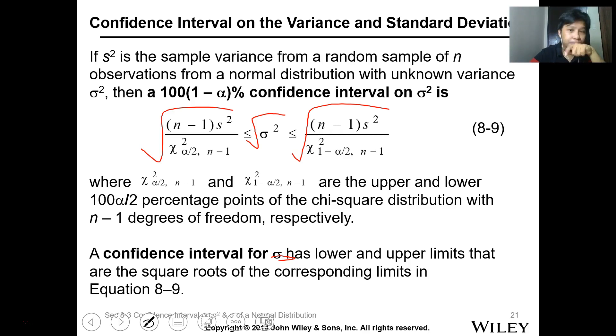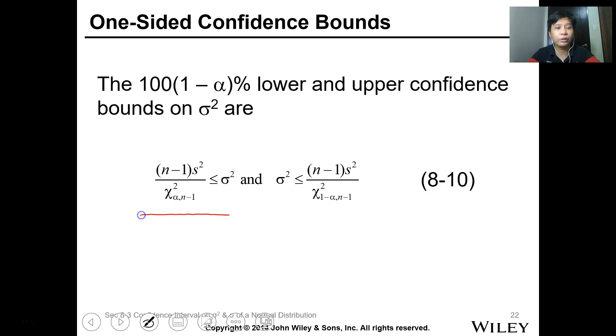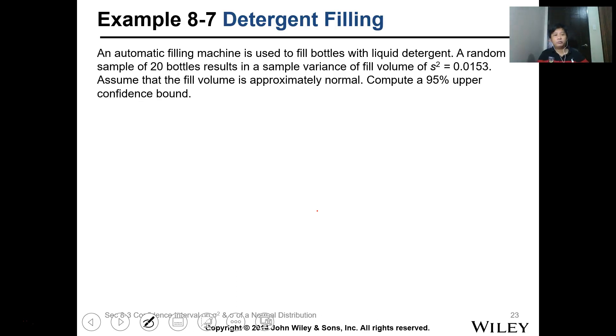For upper or lower limit only, it's a single bound. For lower bound, this is just alpha. This is 1 minus alpha. For upper bound, this is it, lower bound and upper bound, just alpha. This is 1 minus alpha for the confidence interval. Let's have this one, the detergent filling. An automatic filling machine is used to fill bottles with liquid detergent. A random sample of 20 bottles results in a sample variance of fill volume of 0.015. Assume that the fill volume is approximately normal. Compute a 95% upper confidence interval.